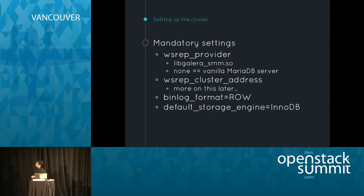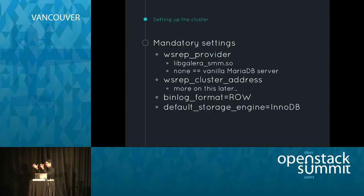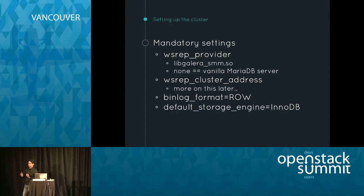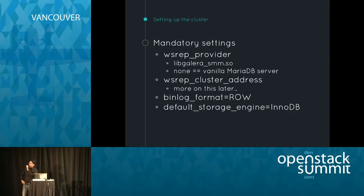The second mandatory variable is WSREP cluster address — the IP address of any existing node in the cluster. If you have an existing cluster and a new node wants to join, you use this option to point the new node to the cluster. It accepts multiple IP addresses separated by commas.